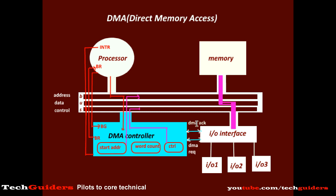For example, suppose we need to read a block of 20 words from I/O device 1 into memory starting at location 1000. Then the starting address register content is 1000, the word count register content is 20, and the control information is read from IO 1. The DMA controller places the address 1000 onto the address bus, the control information onto the control bus, and the IO module places the data from IO device 1 onto the data bus to be written to memory location 1000.